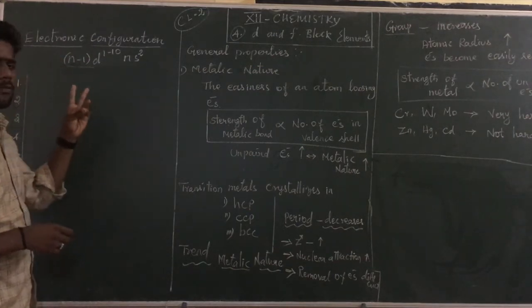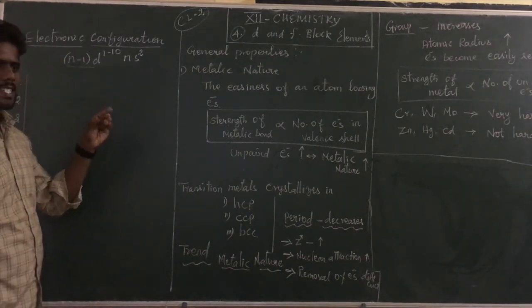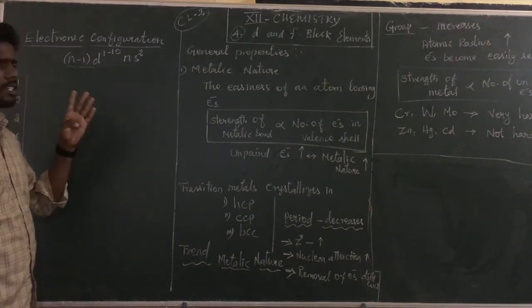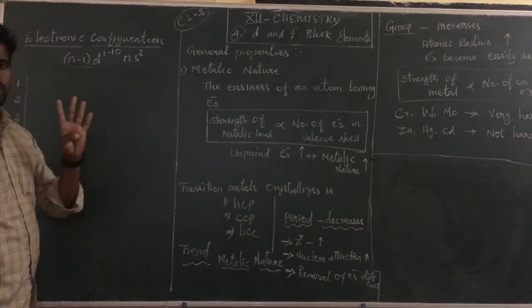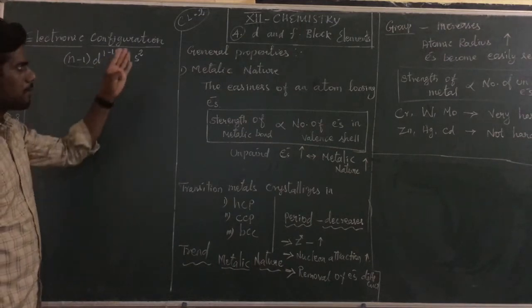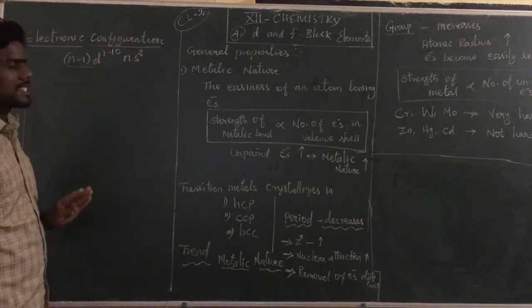In the electronic configuration, we see 3d, 4d, 5d, 6d series. So, in this section we are going to see the four series of transition elements.